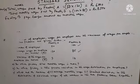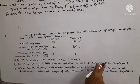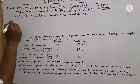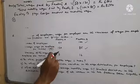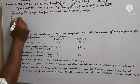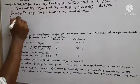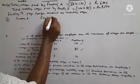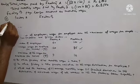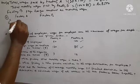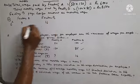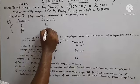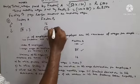Second part: in which factory is there greater variation in wages distribution per employee? Variance of Factory A is given as 9, and Factory B as 16. Variance means standard deviation squared. So standard deviation of Factory A equals root of 9 equals 3, and standard deviation of Factory B equals root of 16 equals 4.